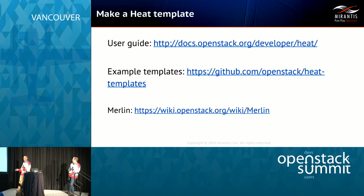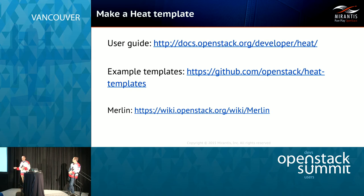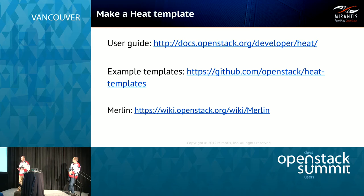You can also make a Heat template. There are a lot of good examples in the user guide, and there are people working on the Merlin project, which would allow you to build Heat templates within Horizon in a wizard walkthrough fashion. Merlin also has the primitives to work with Murano as well — so it's a really cool project.